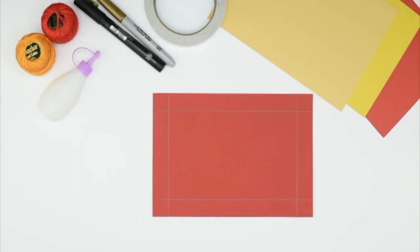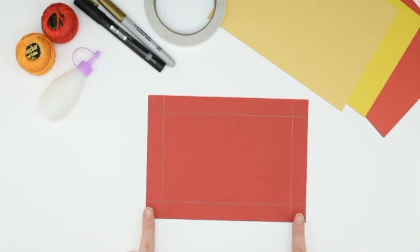To start, take a piece of A5 red card and draw a line from each side two centimeters in to create a frame like this.